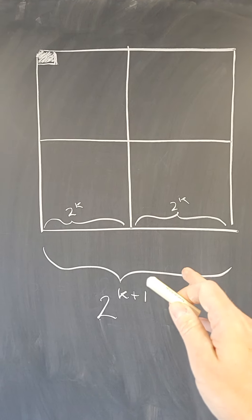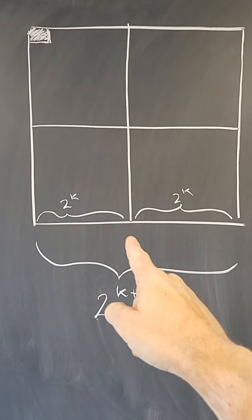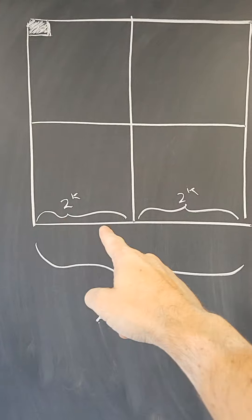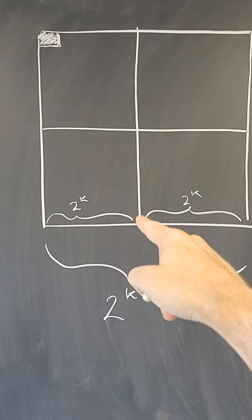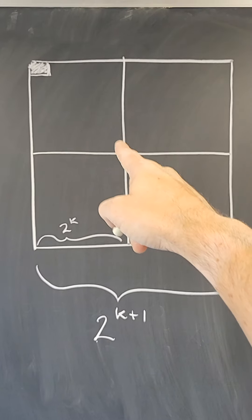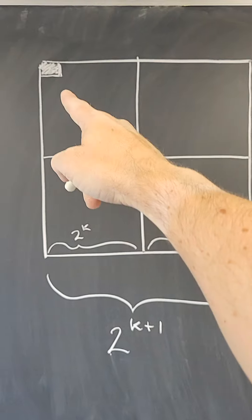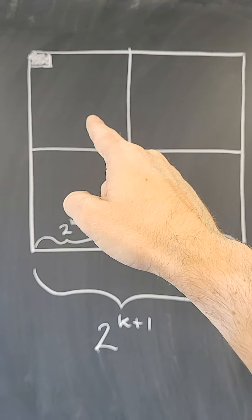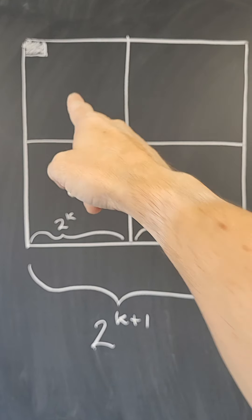Then if we divide it in four pieces, each one has length half of that, which is 2 to the k. So this square is 2 to the k by 2 to the k. This one is 2 to the k by 2 to the k, and one corner is removed. So the induction hypothesis tells me how to tile that one.